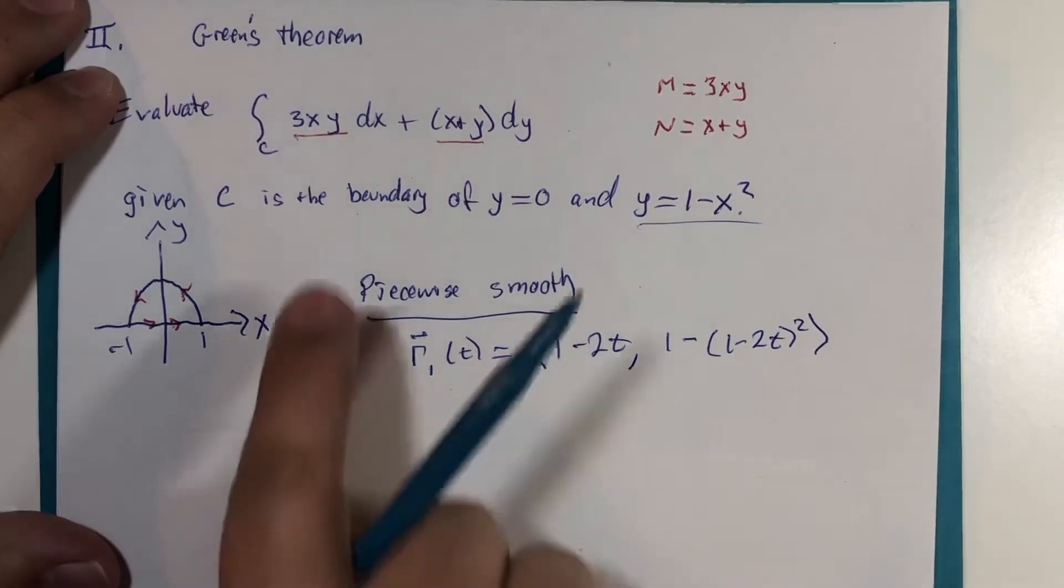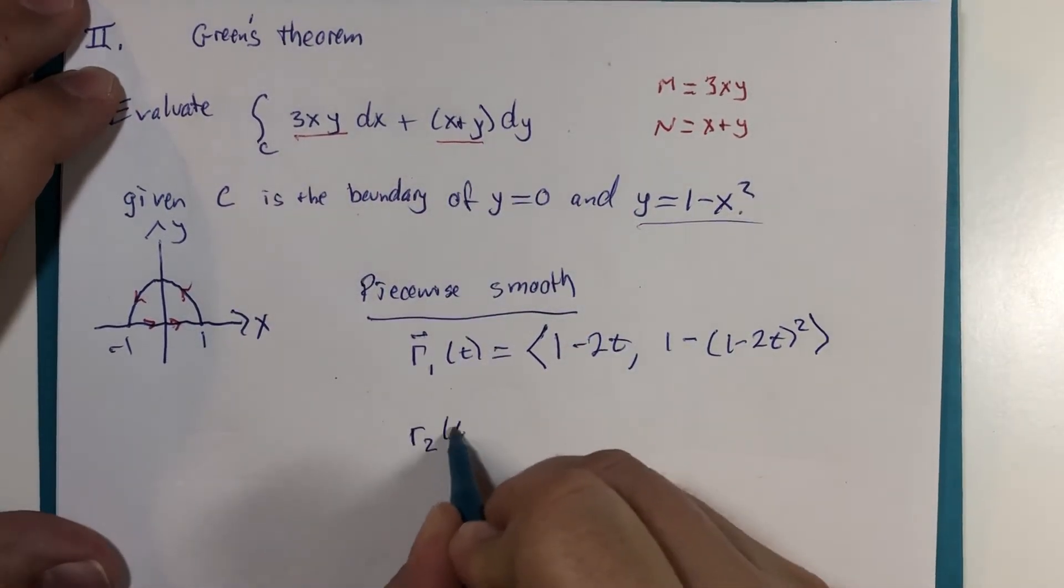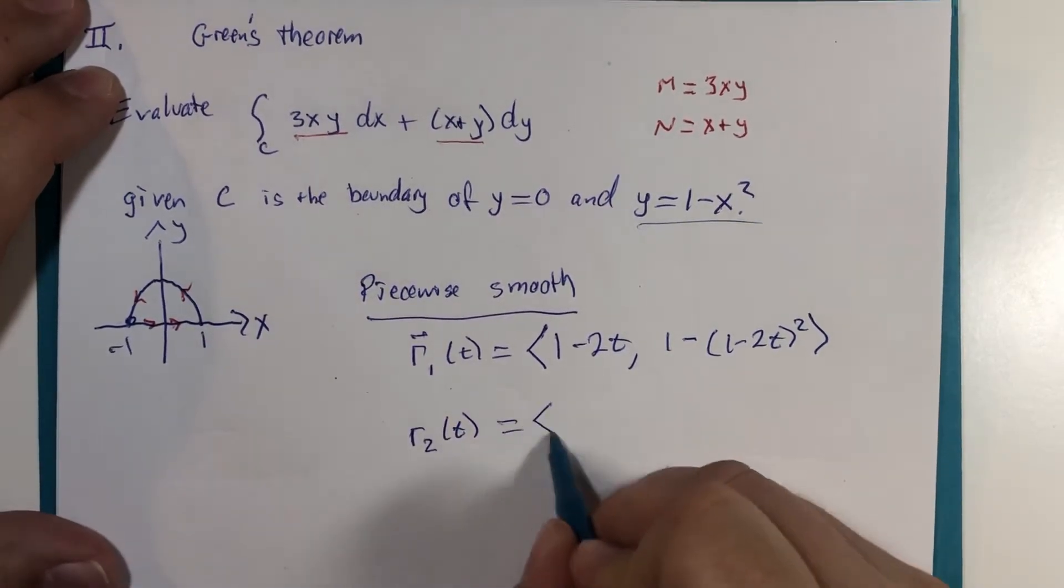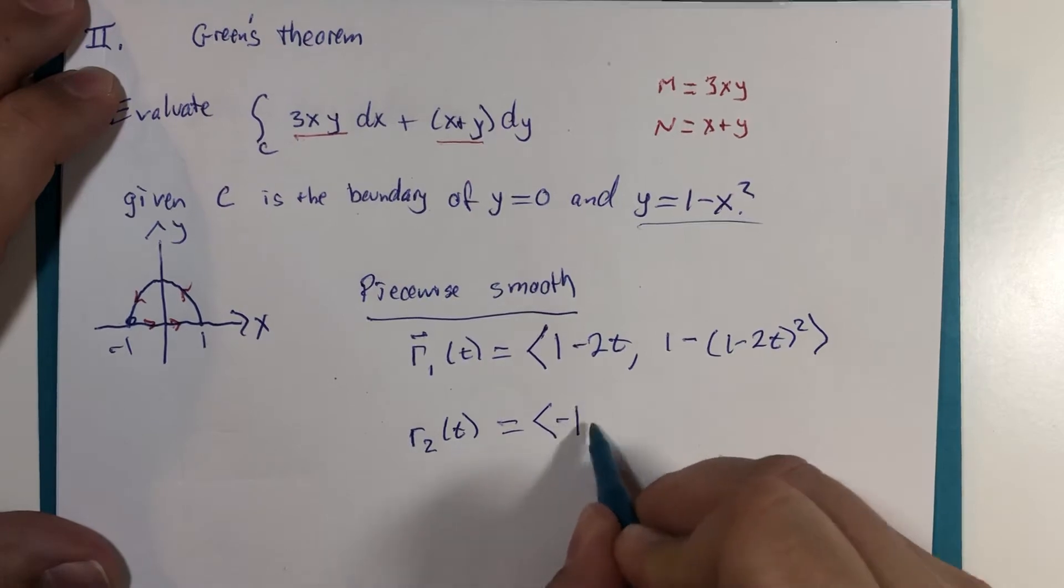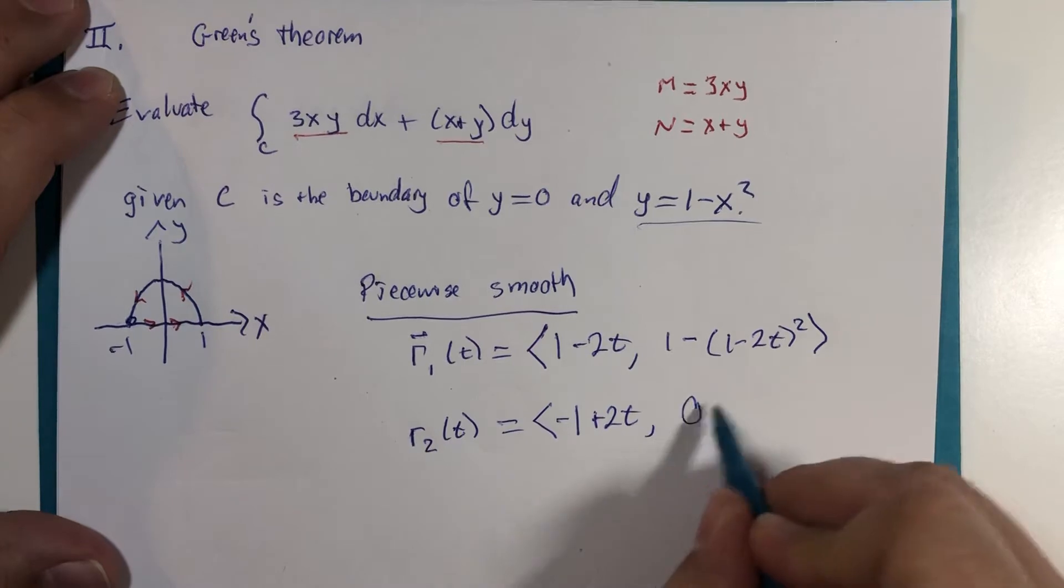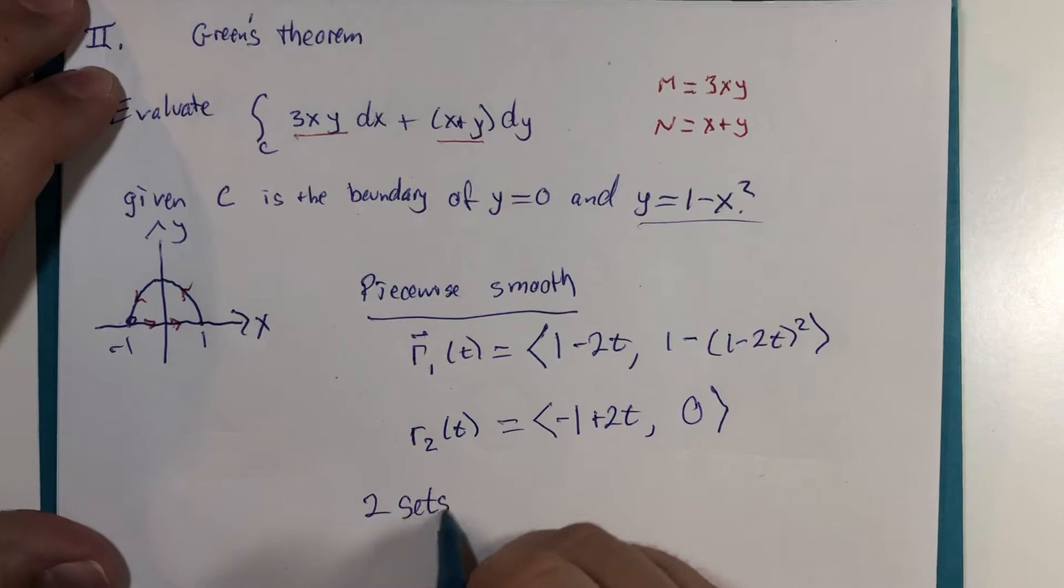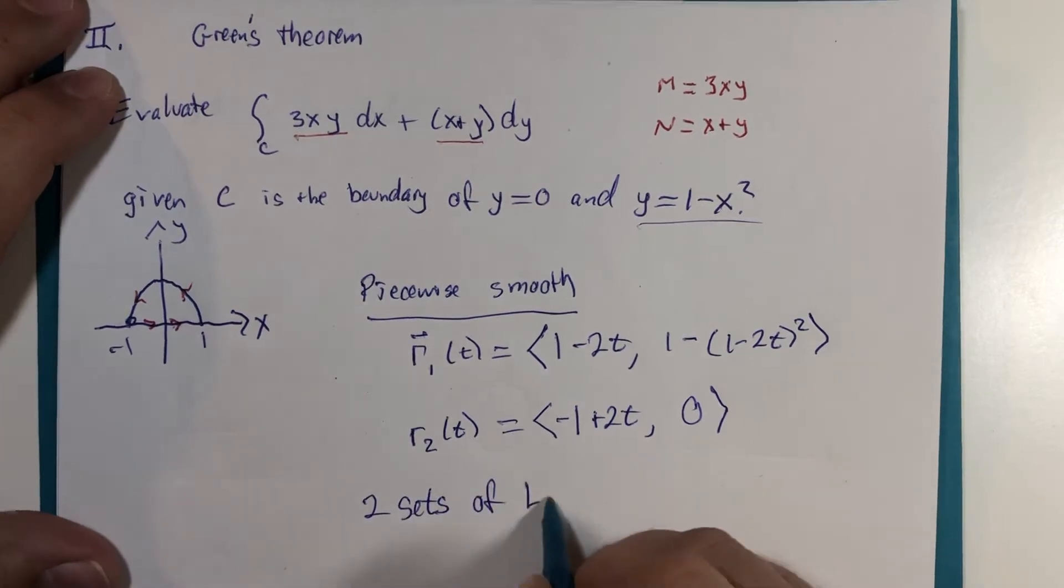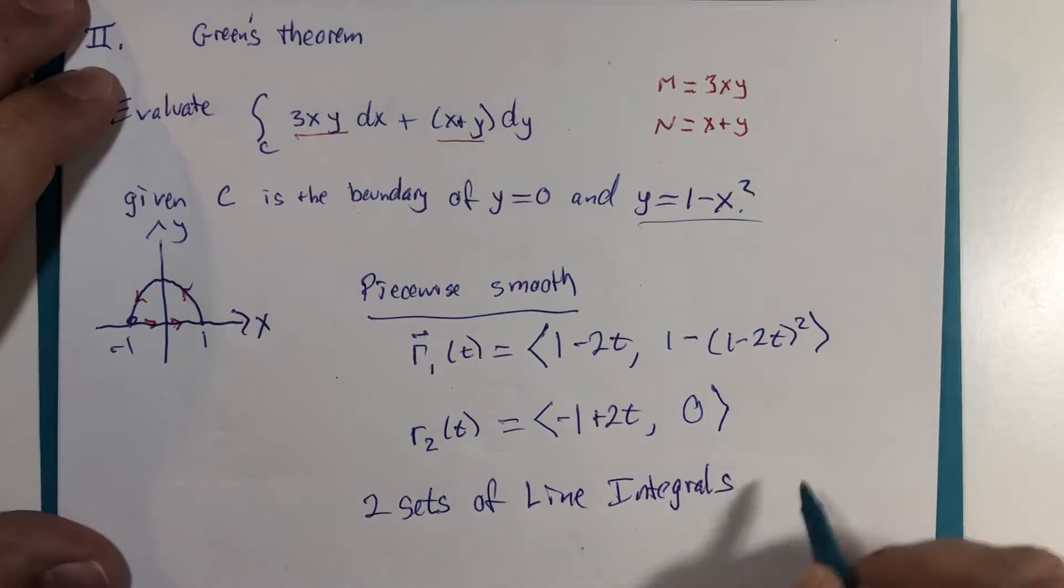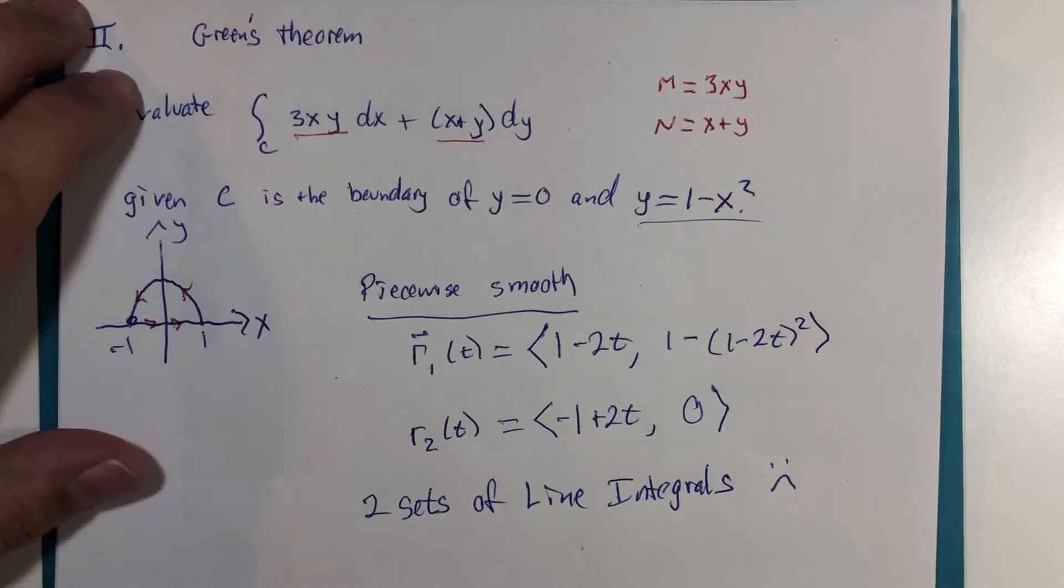This is already not looking too friendly for us if we have to take the derivative for the velocity vector and substitute x and y into components here. And then we'd need r2 of t that returns us from here to here, where x begins at negative 1 and goes right 2 units. And y is always 0. We'd have to do two sets of line integrals to make this happen. So, not something that's looking like it's going to be a lot of fun.